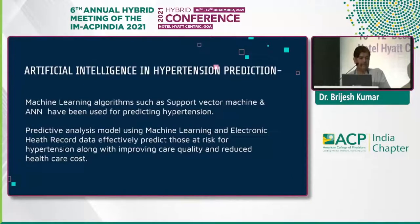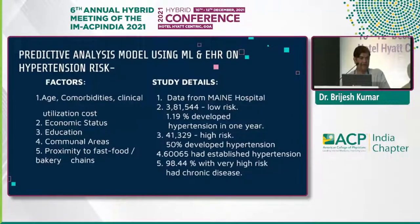Artificial intelligence hypertension detection and prediction: machine learning algorithms such as support vector machine and artificial neural networks have been used to predict hypertension. Prediction models using machine learning and electronic health record data effectively predict those at risk for hypertension, along with improving care quality and reducing healthcare costs. This is the predicted analysis model using machine learning and electronic health record on hypertension risk direction.